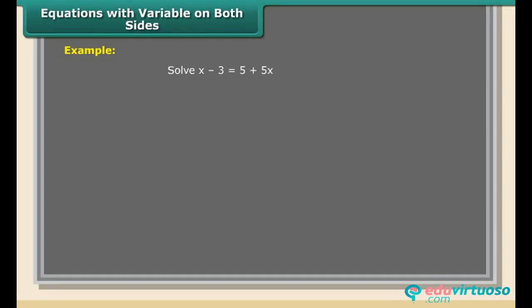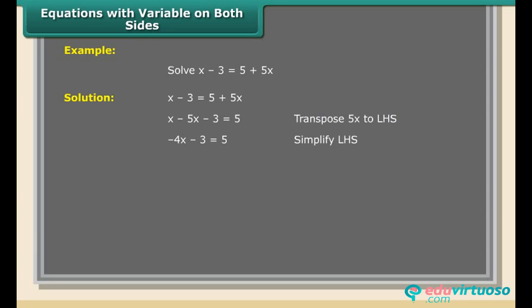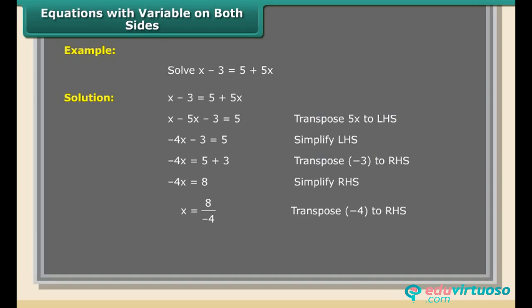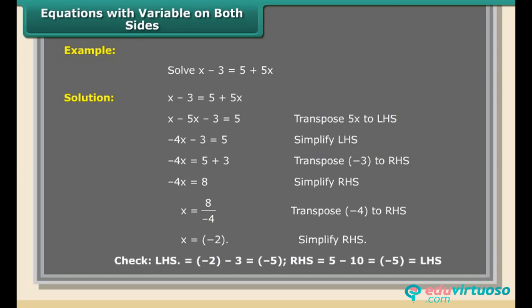Equations with variables on both sides. Example — Solve: x − 3 = 5 + 5x. Solution: x − 5x − 3 = 5 (transpose 5x to LHS); −4x − 3 = 5 (simplify LHS); −4x = 5 + 3 (transpose −3 to RHS); −4x = 8; x = 8/(−4) = −2. Check: LHS = −2 − 3 = −5; RHS = 5 + 5(−2) = 5 − 10 = −5. LHS = RHS.